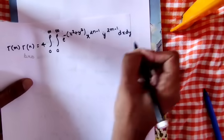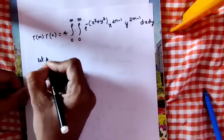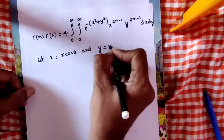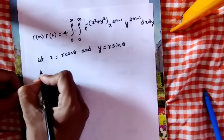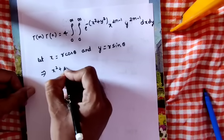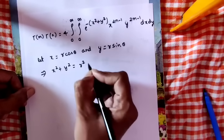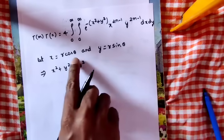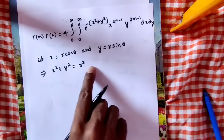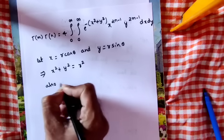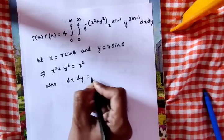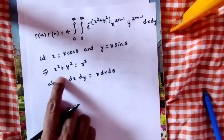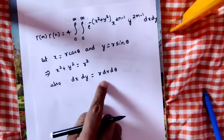Next, let x equal to r cos(theta) and y equal to r sin(theta). This implies x squared plus y squared equals r squared cos squared(theta) plus r squared sin squared(theta), which equals r squared, since cos squared plus sin squared equals 1. Also, dx dy becomes r dr d(theta).